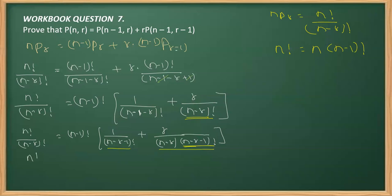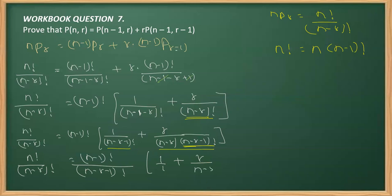We'll keep LHS as it is — that is n! / (n-r)! — is equal to (n-1) whole factorial, and taking (n-r-1) common, we get inside simply 1 over 1, and this is r over (n-r). Now the further expansion I'm doing on the other side of the screen.